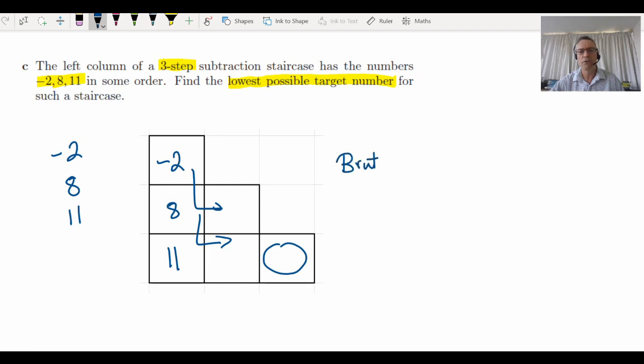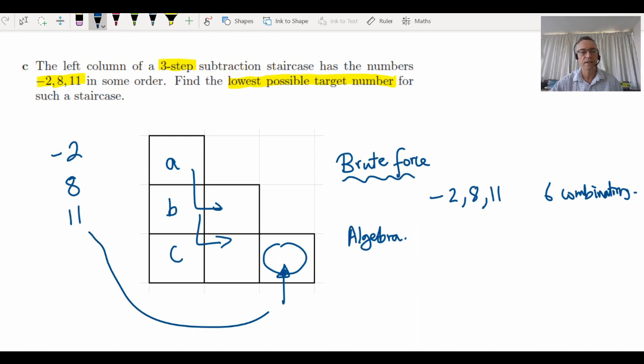How are we going to do that? One approach would be what I call brute force. So we have three numbers to play with: negative two, eight and 11. Convince yourself there are six combinations. We could try all six and see what we get as the lowest target number. Or we might want to possibly try using some algebra. We could call these things A, B, C and think about what the final answer is and see if that informs us the best way to assign these numbers. Either method will work.